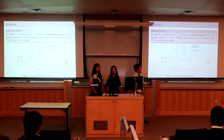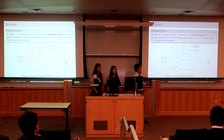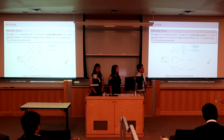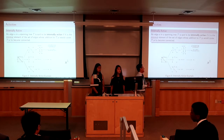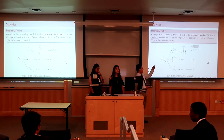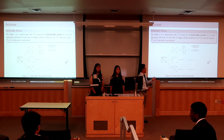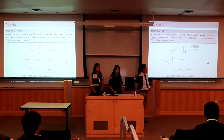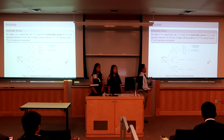For activities, if we have a spanning tree and there's an edge inside the spanning tree, we call it internally active if, when we remove it from the spanning tree, it's the least element of the link set — that is, the set of all edges whose addition to this new graph would cause it to become connected again. You can see that edge one is the least element of its link set, so it's internally active, whereas edges four and five are not. We raise x to the first power since there is only one internally active edge.